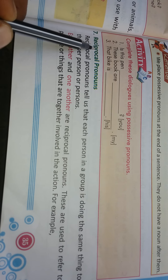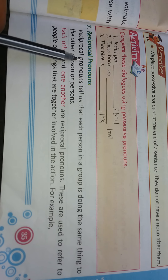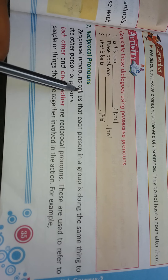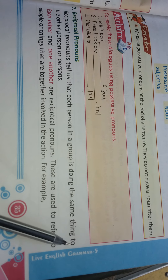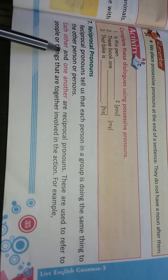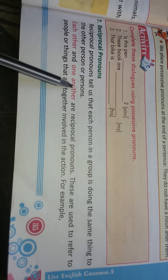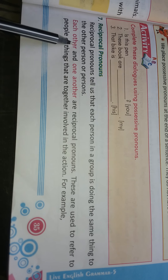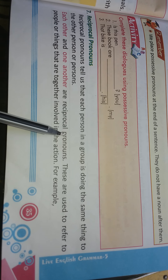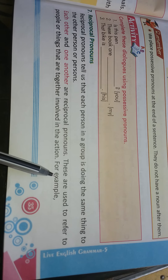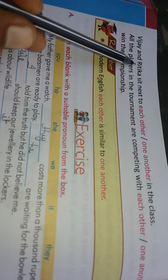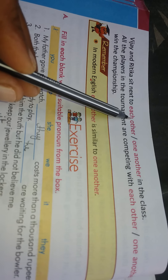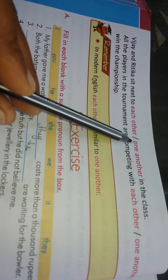Next and last, Reciprocal Pronouns. Reciprocal pronouns tell us that each person in a group is doing the same thing to the other person or persons. 'Each other' and 'one another' are reciprocal pronouns. For example: 'Vijay and Ritika sit next to each other' or 'like one another in the class.'